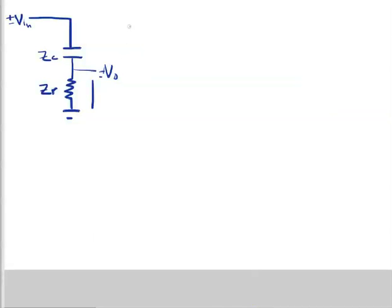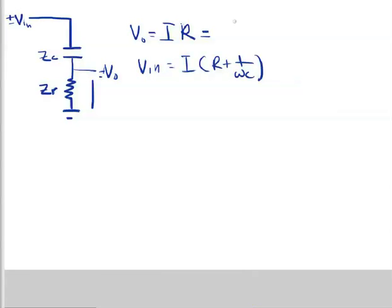Now if we reverse the order of the resistor and the capacitor, we have a circuit that looks like this. In this case, V_out is equal to the current times the impedance in the resistor, whereas before it was the impedance in the capacitor. So this is going to be R. And if we solve for I in here where V_in is equal to I times R plus 1 over ωC, V_out is going to equal V_out.